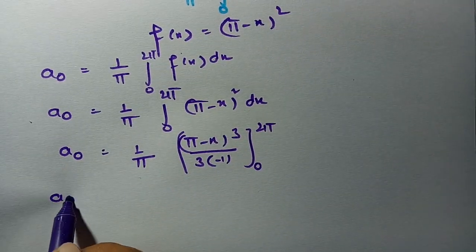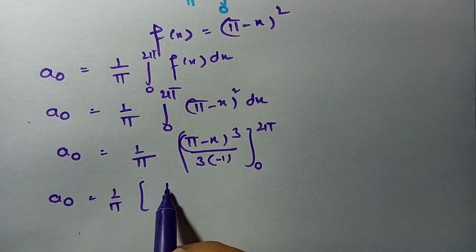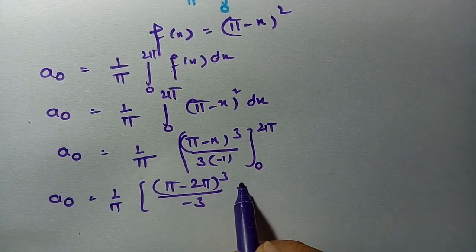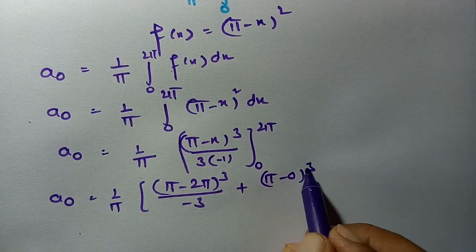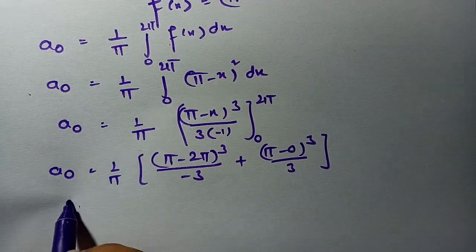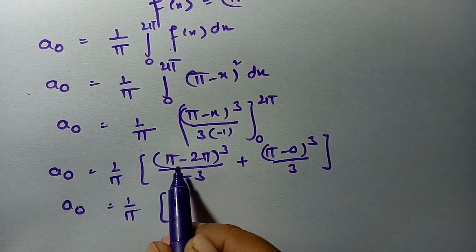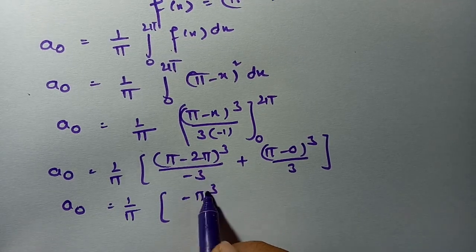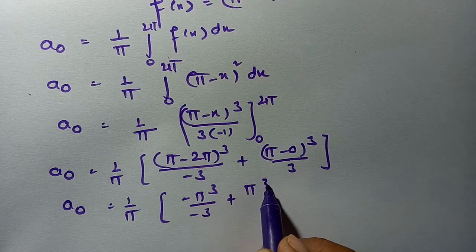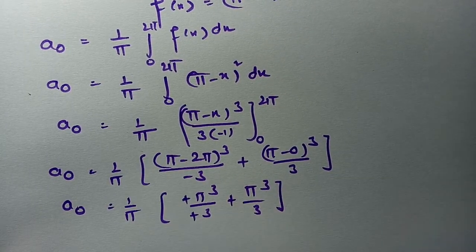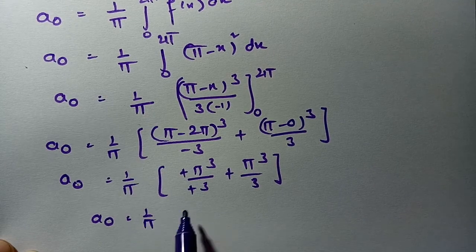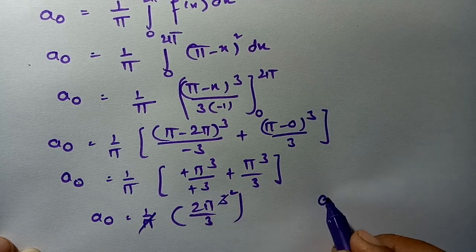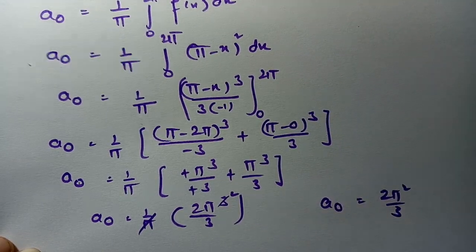Substituting the upper limit minus lower limit: upper limit gives (π - 2π)³ / (-3), and lower limit gives (π - 0)³ / 3. So (π - 2π) = -π, giving (-π)³ / (-3) = π³/3. And the lower limit gives π³/3. Combining: a0 = (1/π) · (2π³/3). Cancelling π, a0 = 2π²/3.